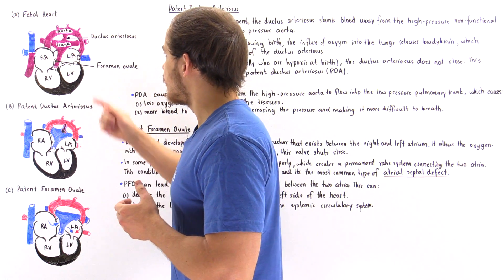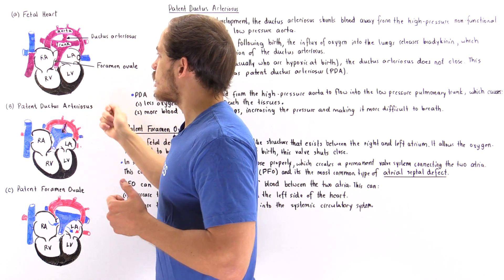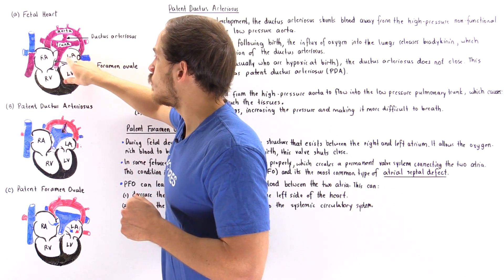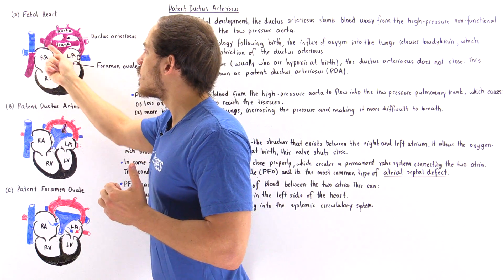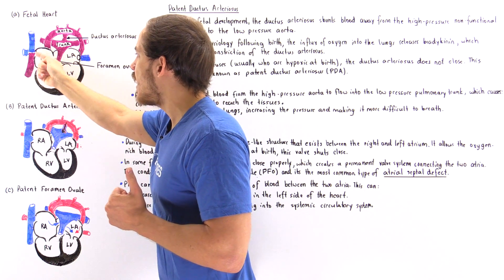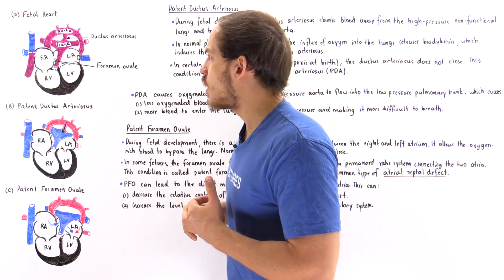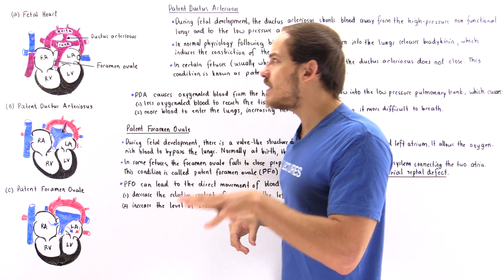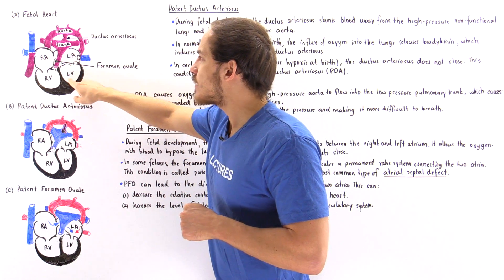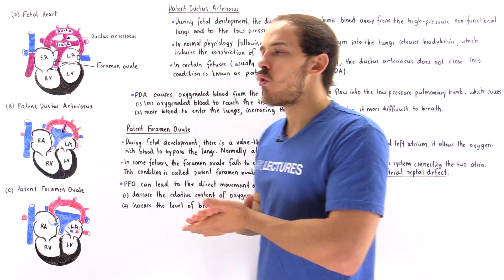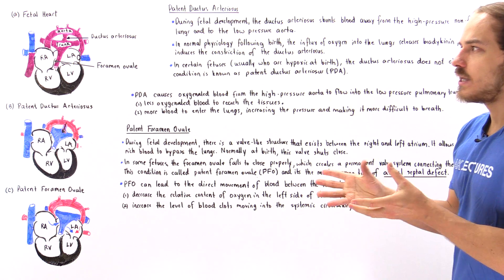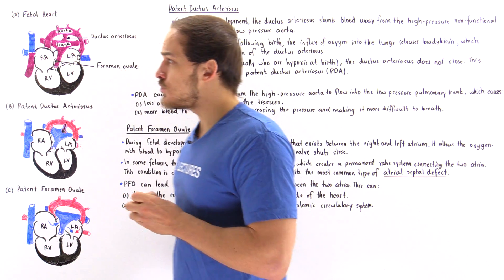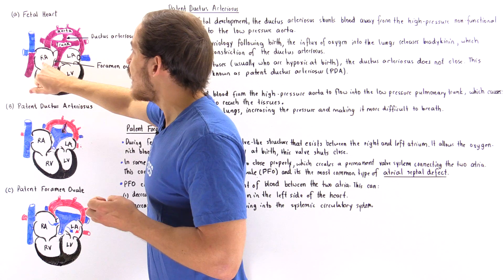An atrial septal defect means there is an abnormality in the wall between the two atria, causing the valve to remain open. Normally, this condition is not very dangerous. Because the left side of the heart has higher pressure than the right, only a tiny bit of oxygenated blood from the left atrium moves into the right atrium and returns to the lungs via the pulmonary trunk. There is still enough blood in the left atrium to flow into the left ventricle and supply the body's tissues and organs.